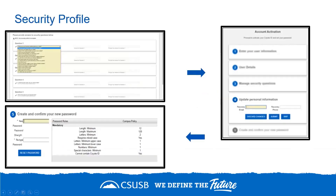Next, you'll need to complete your security profile by setting up your security questions. You are required to establish five security questions. Designate which questions you'd like by clicking on the pencil icon and choosing a question from the drop-down list, then type and retype your responses in the spaces provided next to each question. Click Submit to apply your changes.